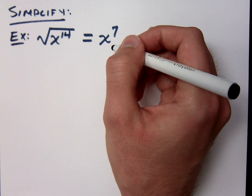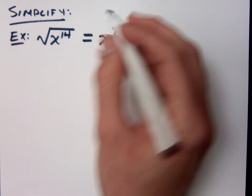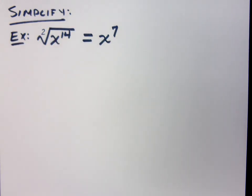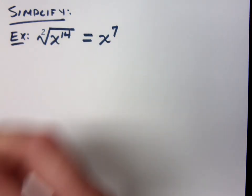What's the easy way for working with exponents inside radicals? Divide. Divide by the index. The index here is understood to be, although not written, 2. So 14 divided by 2 is 7.